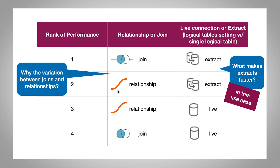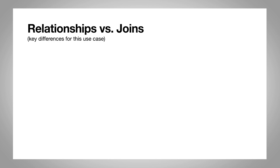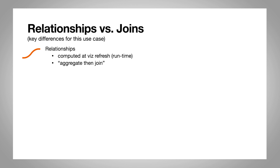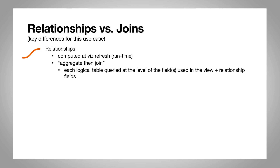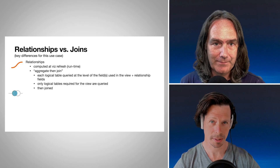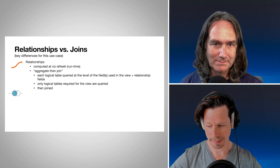Now let's talk about the relationship versus join variation. With relationships, I think of it as an aggregate-then-join order of operations. Within relationships, Tableau queries each logical table at the level of the fields used in the view and only queries what's needed, then joins the results together. It's similar in spirit to data blending — a post-aggregate join — where we do aggregate queries and join the limited results of those aggregates instead of doing a record-level join of everything.